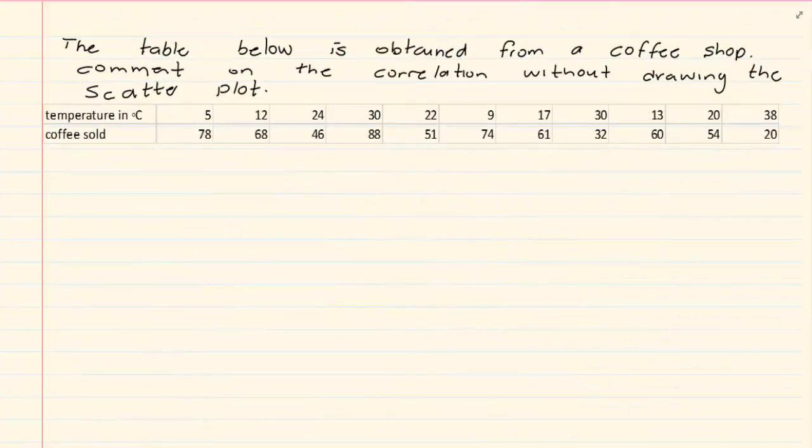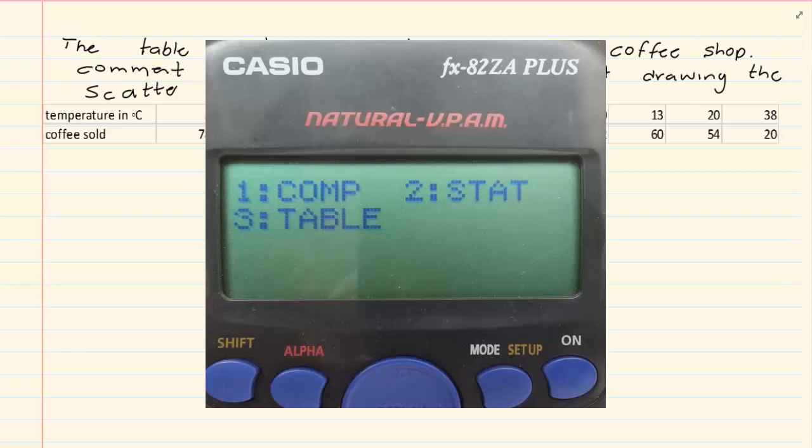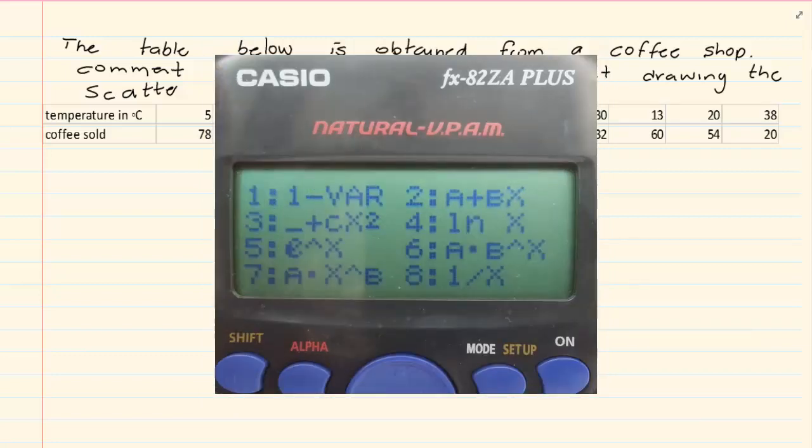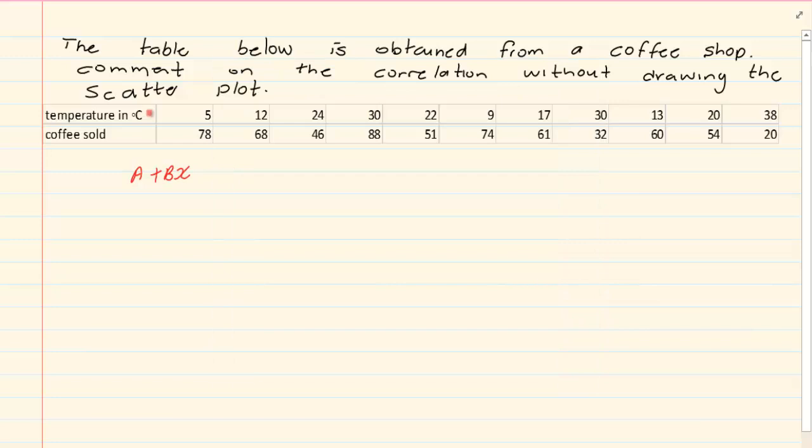So if they tell you the table below is obtained from a coffee shop, comment on the correlation without drawing the scatter plot. What are we going to do? This year you're going to use your calculator. So you're going to go mode 2 and then we're going to number 2. Remember we're looking at the a plus bx button. Then you're going to fill in your data. Keeping in mind that the first column is always x and the second column is always y.